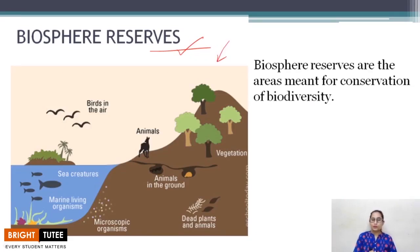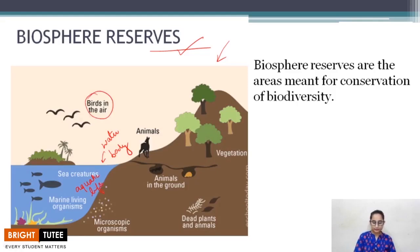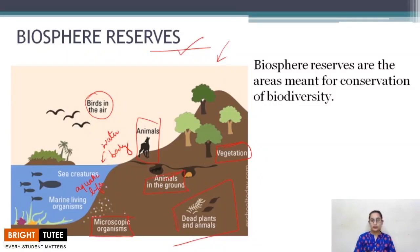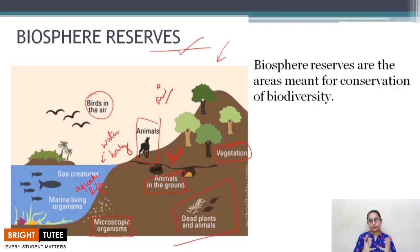Let us start with the picture in front of you. What do you notice? There is a water body with aquatic life, birds in the air, animals living on land, vegetation, animals living under the soil, dead remains of plants and animals, and microscopic organisms.